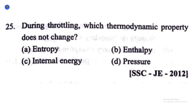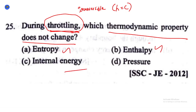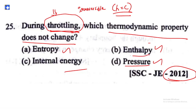The next question: during throttling, which thermodynamic property does not change? Throttling is a kind of irreversible process where enthalpy is maintained as constant. It is an isenthalpic process. The options are: option A entropy, option B enthalpy, option C internal energy, option D pressure. Throttling is an irreversible process — the porous plug experiment — where enthalpy is maintained as constant. Option B is the correct answer.